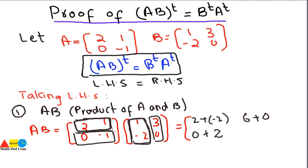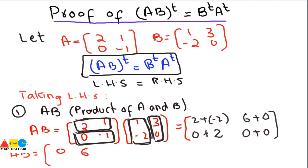Then multiplying the second row with the second column: 0×3 = 0 plus (-1)×0 = 0. So AB comes out as: 2 + (-2) = 0, 6 + 0 = 6, 0 + 2 = 2, and 0 + 0 = 0. This gives AB = [0, 6; 2, 0].